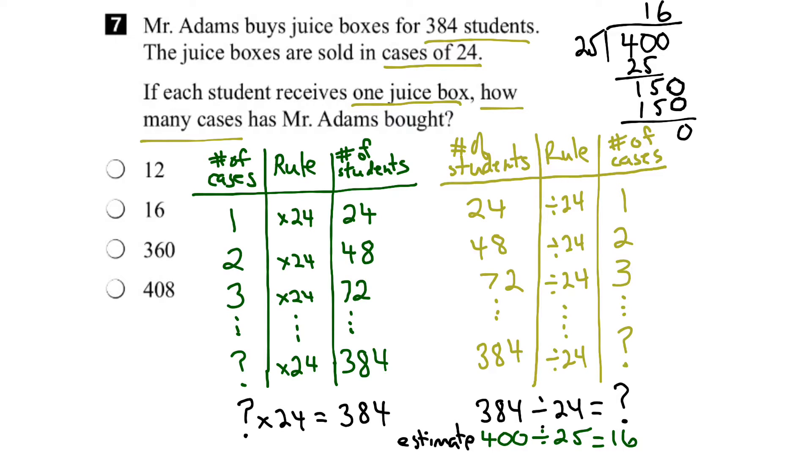Now, remember, this is our estimate here. But we can go back to our first rule here and see, I can verify if I take the number of cases that we thought the answer is 16 multiplied by 24, let's see if it gives us 384. So, we do the math.